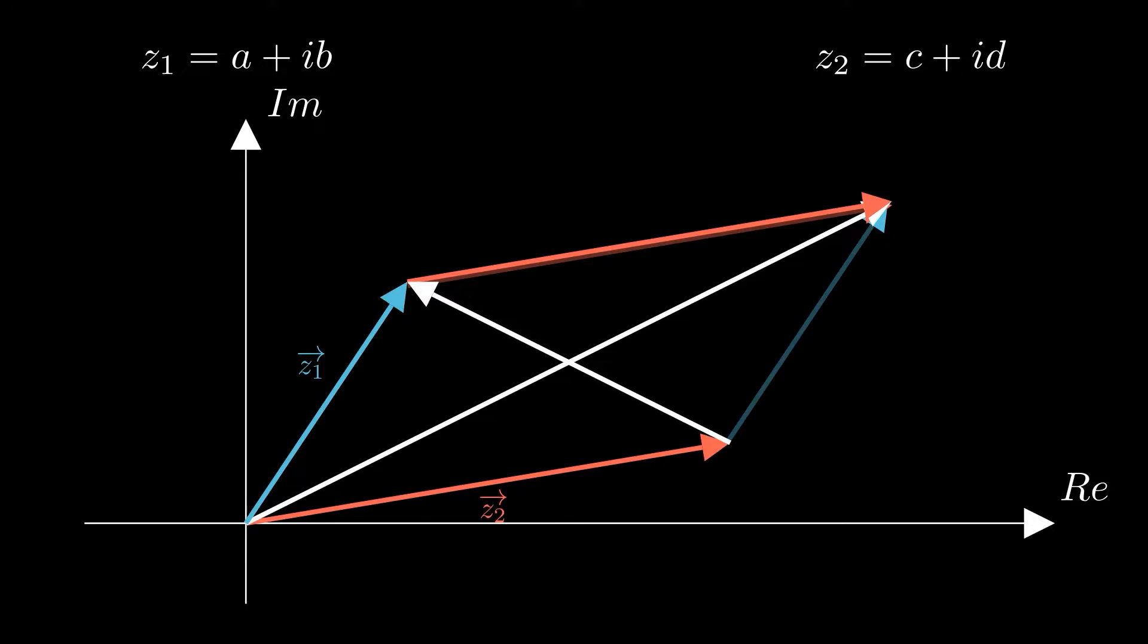Similarly, if I look at the other diagonal, then I can see that since I have to travel along one vector backwards, it represents the subtraction z1 minus z2.